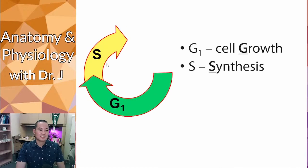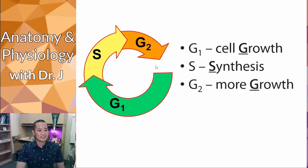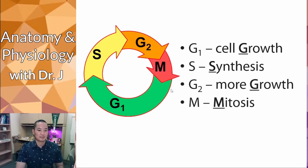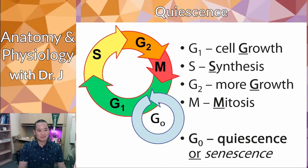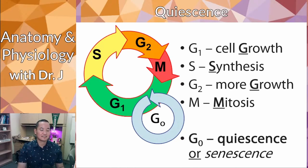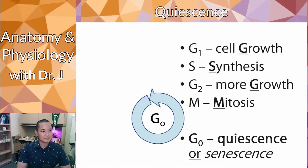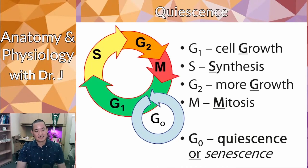So the cell cycle goes: G1, then S phase where you duplicate your DNA, then G2, then mitosis, and then you have two new daughter cells. There's also a G0 phase — quiescence — where cells are still metabolically active but not actively dividing. They're alive but choosing not to divide. Cells can exit G0 phase and re-enter the cell cycle, meaning they'll actually divide again.